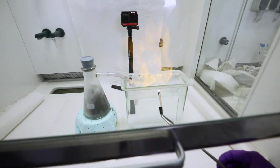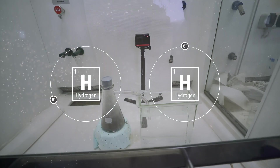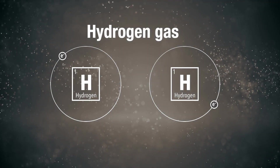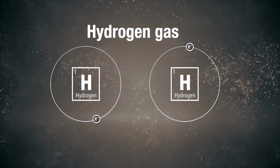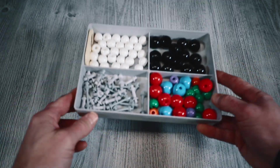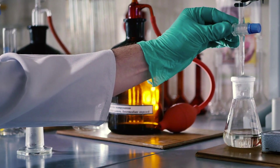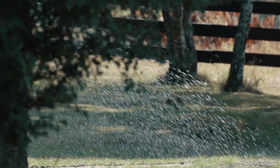Atoms can also bond to each other by sharing the same electrons. This is called a covalent bond. The simplest example is hydrogen gas, where the two hydrogen atoms share both available electrons and therefore fill their first electron shell.